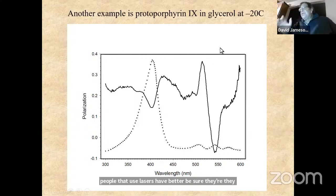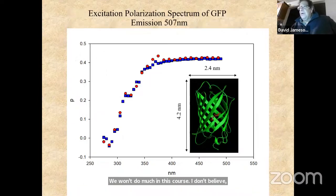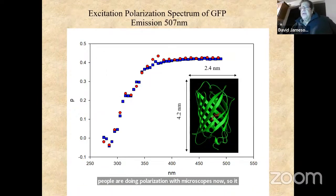You won't do much polarization in this course, but people are doing polarization with microscopes now, so it becomes more important. Here's the excitation polarization spectrum of green fluorescent protein — you can see it reaches a high stable value once we're in the visible wavelength range.